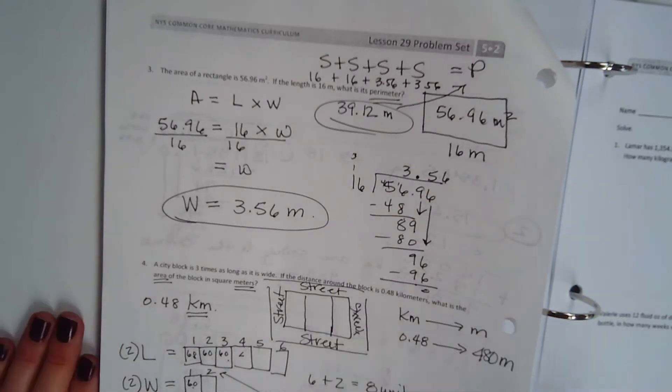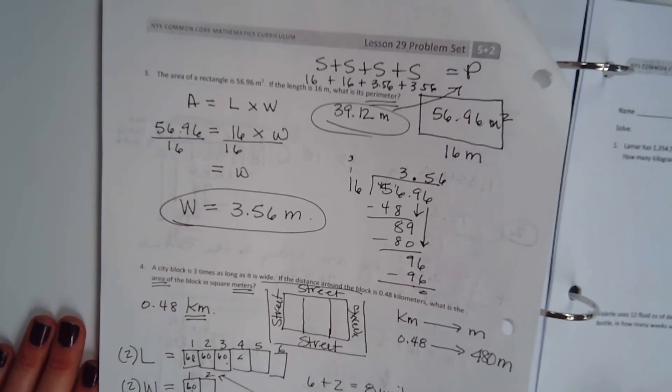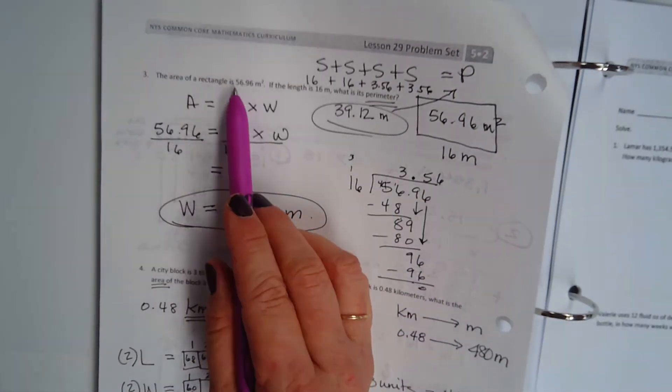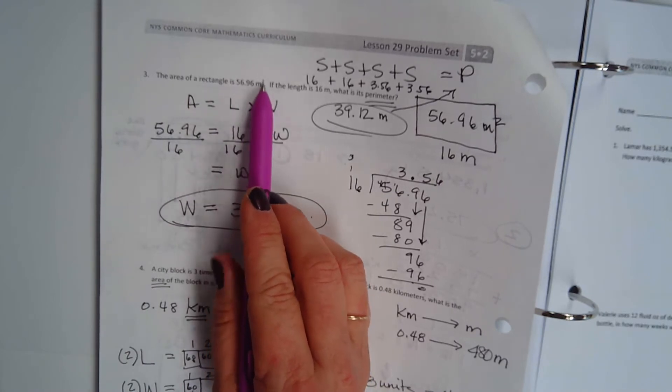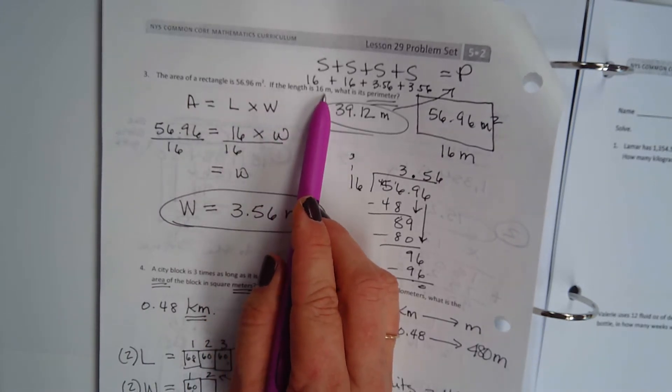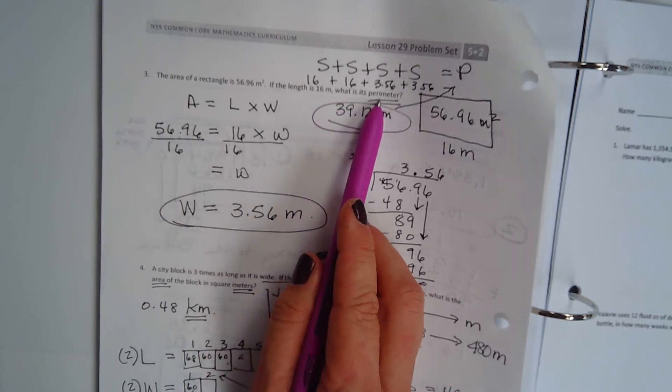Moving on to problem three. The area of a rectangle is 56.96 meters squared. If the length is 16 meters, what is the perimeter?